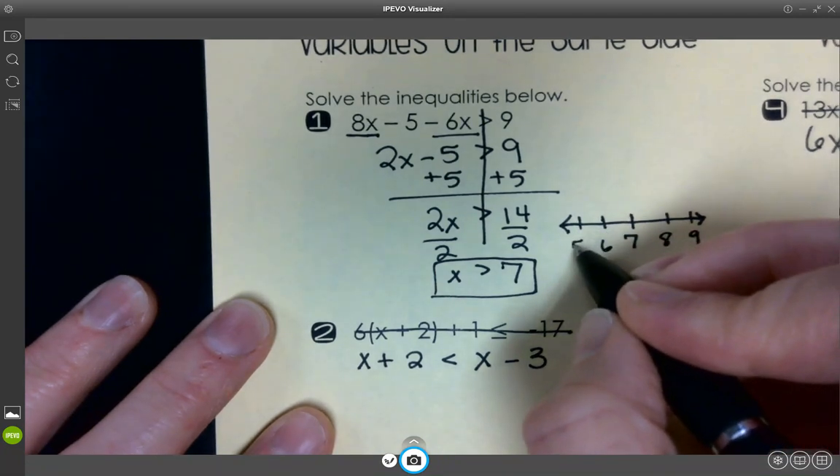Whenever we do our number line, we need to have 7, and then go ahead and do like 8 and 9, and then go the opposite way, 6 and 5. If you need to, look back at yesterday's notes. So, greater than, is it going to be open or closed? Greater than, it's open.